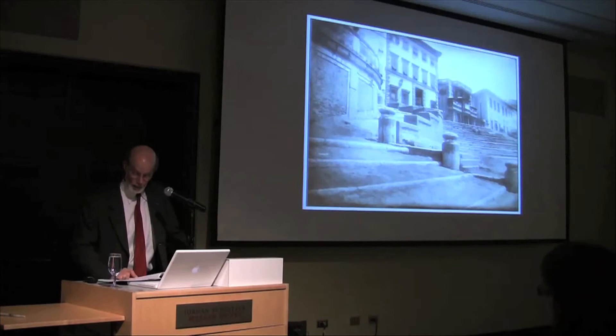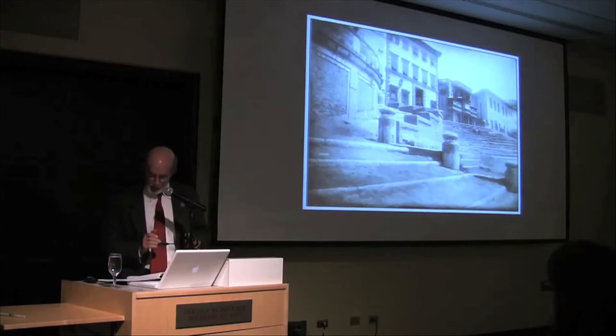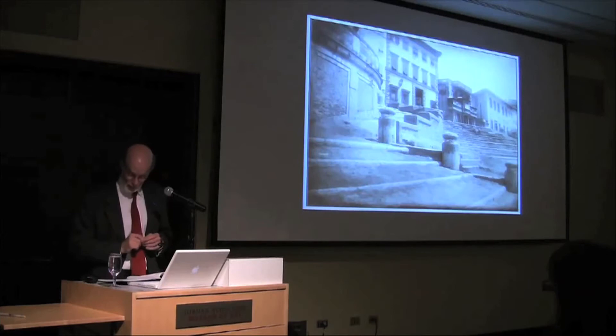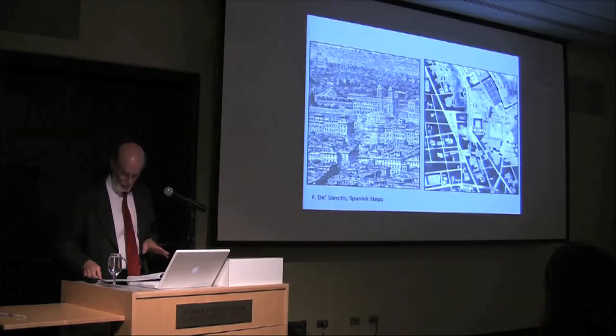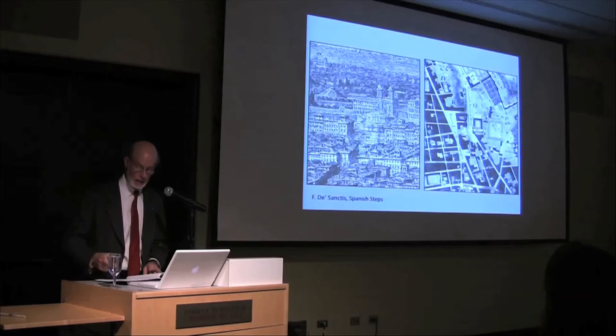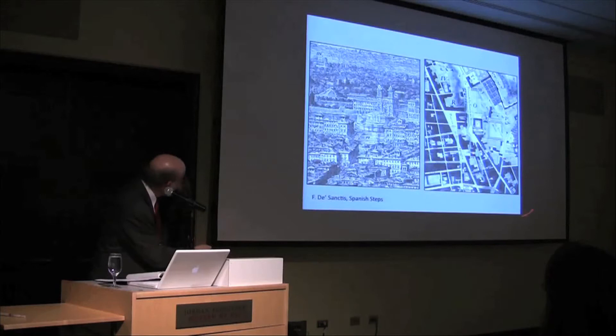The most significant example, perhaps, of 18th-century Roman urbanism is the Spanish Steps, constructed between 1723 and 1728. This staircase effects a crucial link between the new quarters of the city developing on the hills and the older abitato in the floodplain of the Tiber. The stairs also provide a visual link between the 17th-century Barcaccia fountain at the base of the Pincian Hill and the 16th-century Church of the Trinità dei Monti above — the Barcaccia fountain below, the church above.